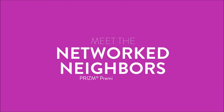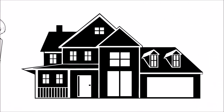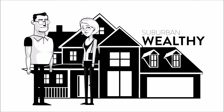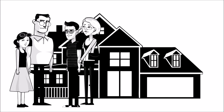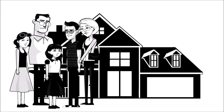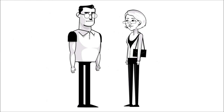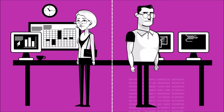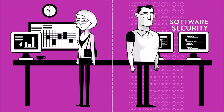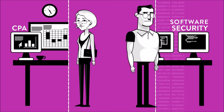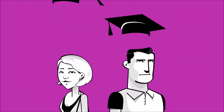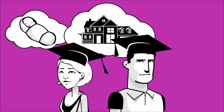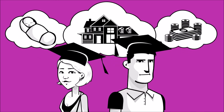Meet Network Neighbors, Prism Premier segment number two. Monica and Jeff, our Network Neighbors, are a suburban, wealthy, middle-aged couple with three kids: Michael, age 17, Julia, age 14, and Sarah, age 12. They are well-educated and financially savvy. Jeff graduated with a master's from Yale and Monica with a BA from Brown. Jeff is an executive at a software security firm and Monica is a CPA. They have been planning for a family since college and are well-positioned for college tuition and retirement with significant income-producing assets.